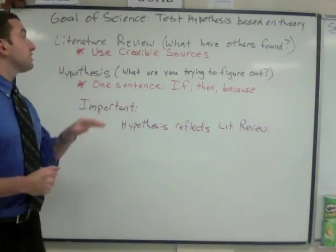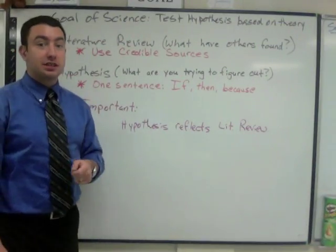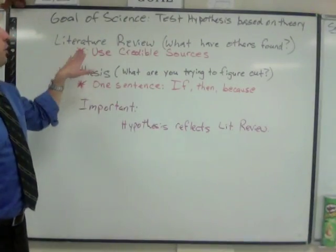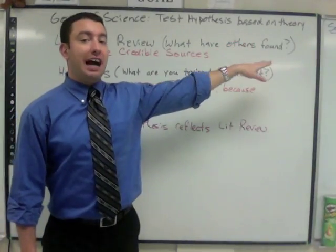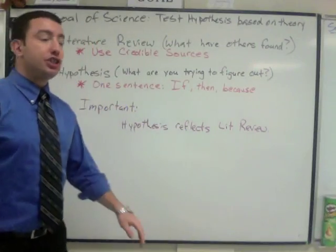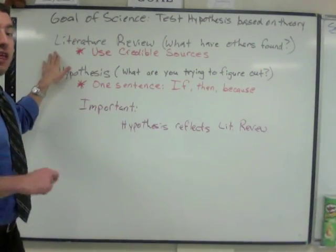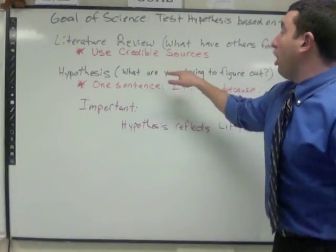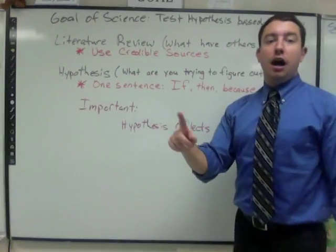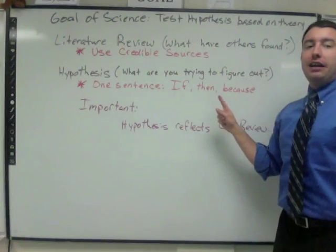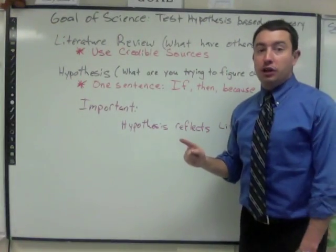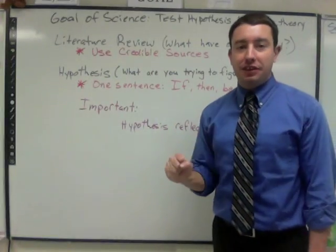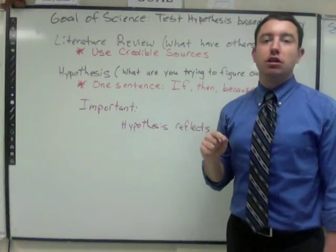Just a quick review. The goal of science — and remember that sociology is a social science — is to test a hypothesis based on theory. When doing your literature review, look at what have others already found out. Make sure you're using credible sources that reference other works. For your hypothesis, determine what you are trying to figure out. Make sure it's one sentence and an if-then-because statement. Most importantly, your hypothesis reflects your literature review — you base your hypothesis on what you determine from your literature review.